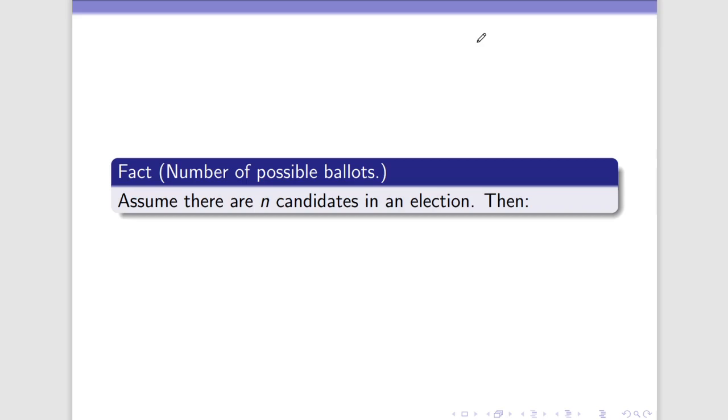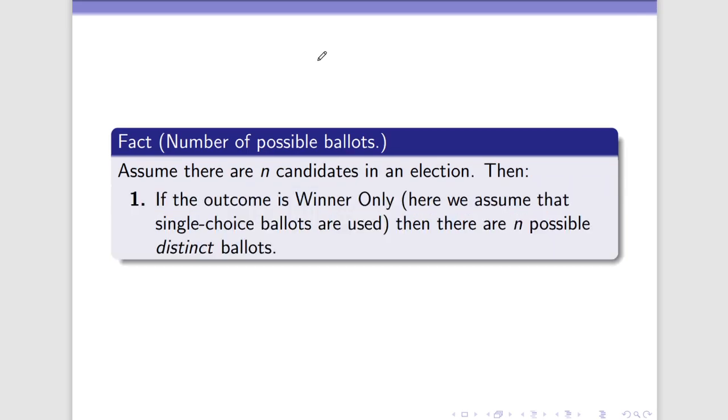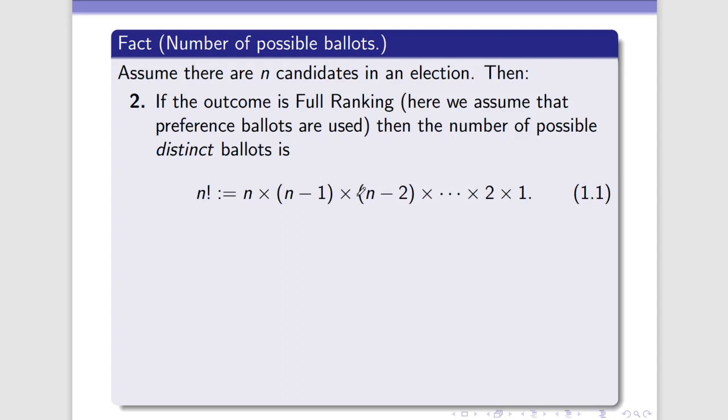So we have a fact here. We're going to assume there are n candidates. So in other words, n is a whole number. It's greater than or equal to two. If there are n candidates, then if we are looking at an outcome of winner only, and we're going to assume that we're only using single choice ballots, there are n possible distinct ballots. And that is pretty obvious. After all, we can only vote for person one, person two, person three, etc., all the way through person n. So there can only be n distinct ballots. If the outcome is full ranking, and we're going to be assuming we used preference ballots, then the number of possible distinct ballots is, well, this is called n factorial. And n factorial is found by taking n, multiplying it by n minus one, then multiplying that by n minus two, then etc., etc., all the way down to times two and then times one.